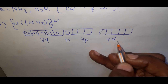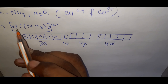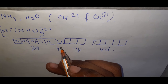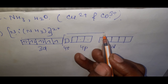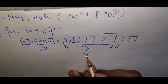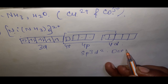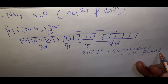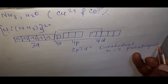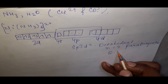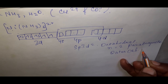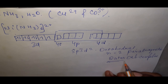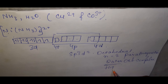Since NH₃ acts as a weak ligand here, six orbitals are used: 4s + 4p³ + 4d² giving sp³d² hybridization with an octahedral shape. The complex is paramagnetic (n = 2 unpaired electrons), forming an outer orbital complex and a high spin complex.